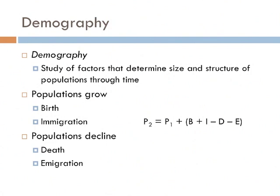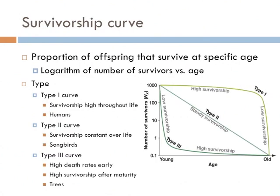The new population is defined as P2, where the old population is P1 — population at time 1 and population at time 2. Population ecologists often look at a survivorship curve of a population. A survivorship curve is a graph of the number of survivors within a population throughout their lifespan.